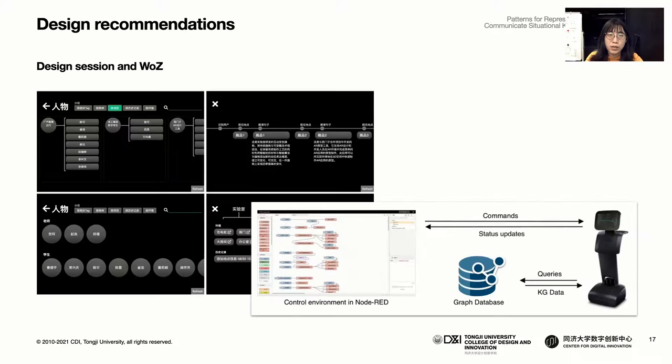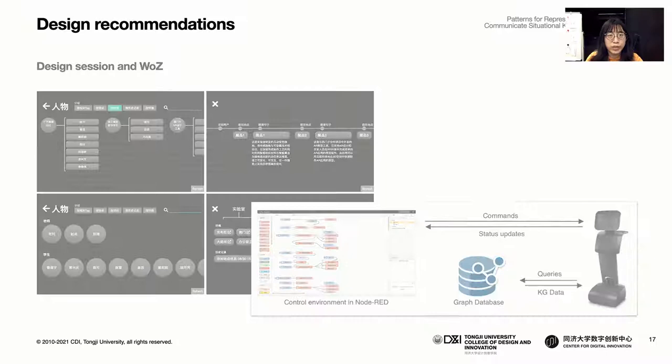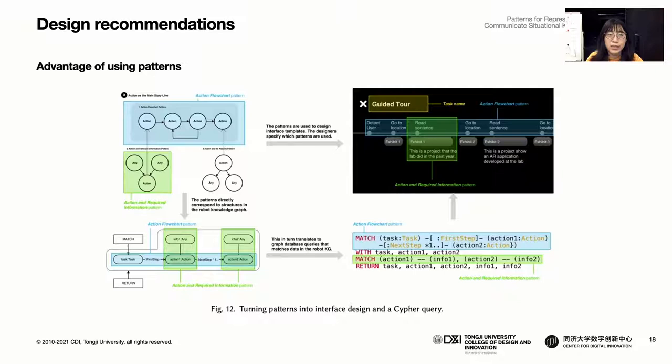Our co-researchers not involved in the analysis designed a set of knowledge communication interfaces for a lab service robot using the pattern library. We then tested the interface using Wizard of Oz techniques on a TEMI robot. During the process, we found that an advantage of using the patterns is that they can be directly translated to graph database queries, while designers can design interfaces without detailed knowledge of the KG structure.